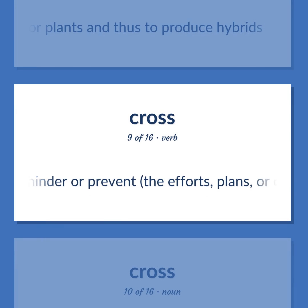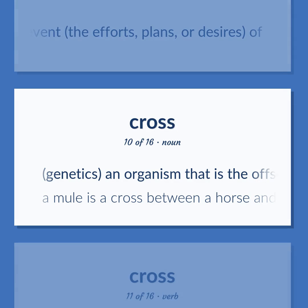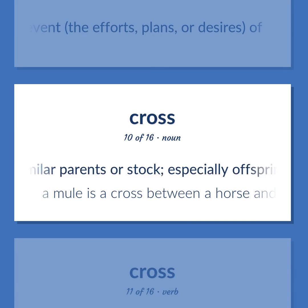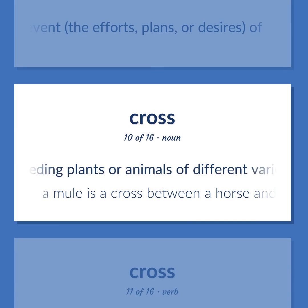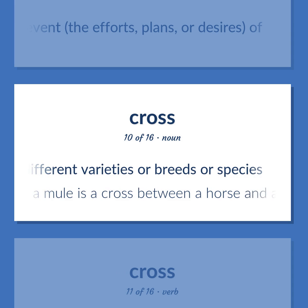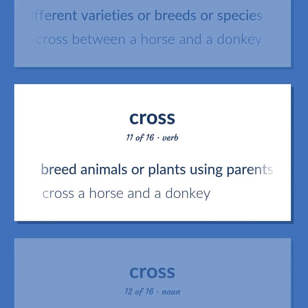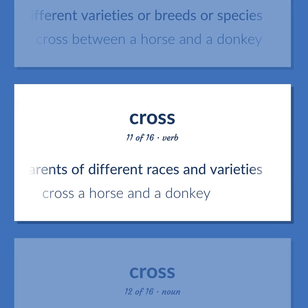In genetics, the act of mixing different species or varieties of animals or plants to produce hybrids. To hinder or prevent the efforts, plans, or desires of. Also: an organism that is the offspring of genetically dissimilar parents — e.g., a mule is a cross between a horse and a donkey. To breed animals or plants using parents of different races and varieties; e.g., cross a horse and a donkey.